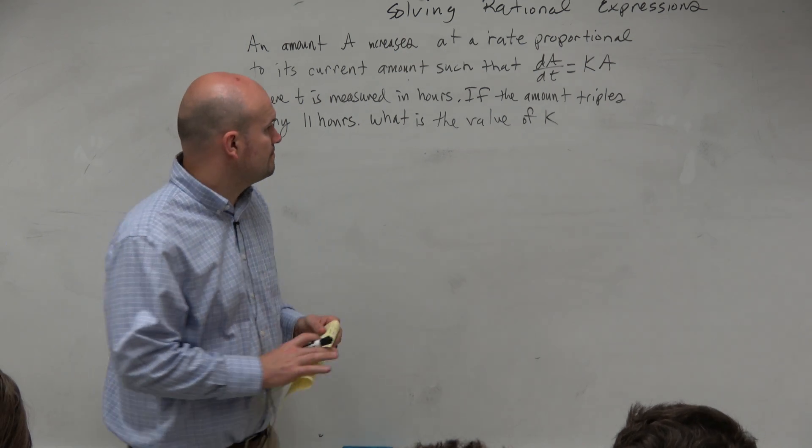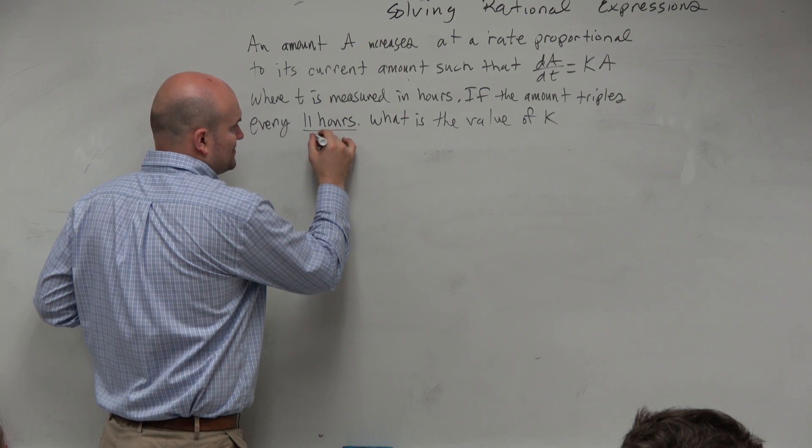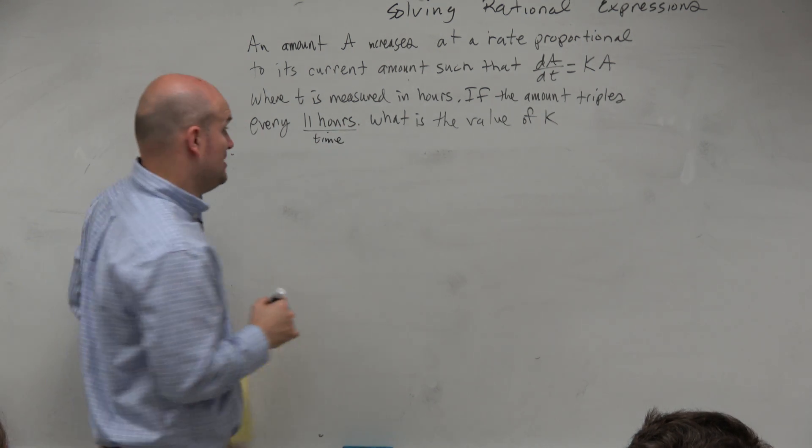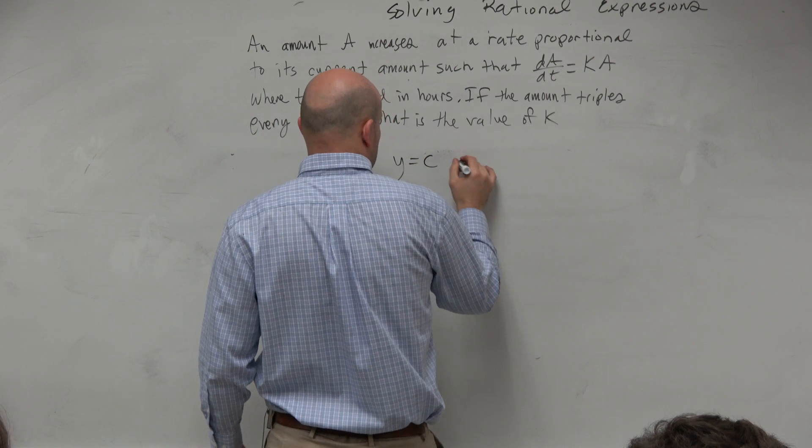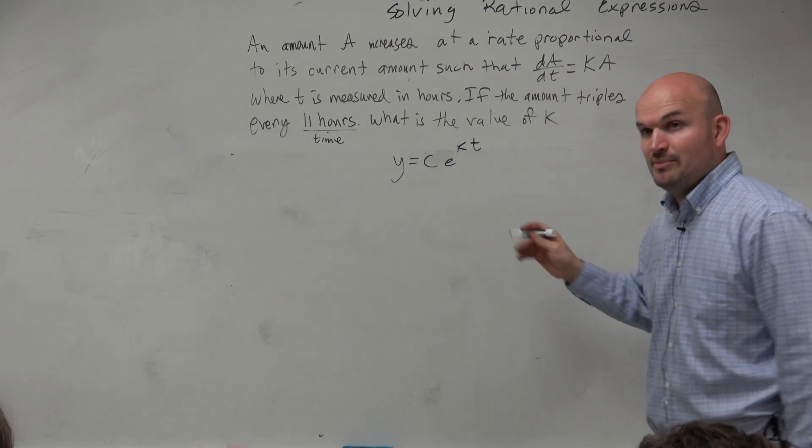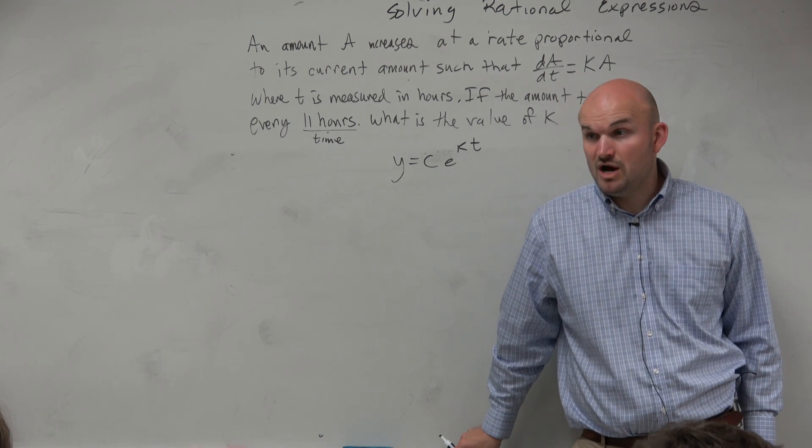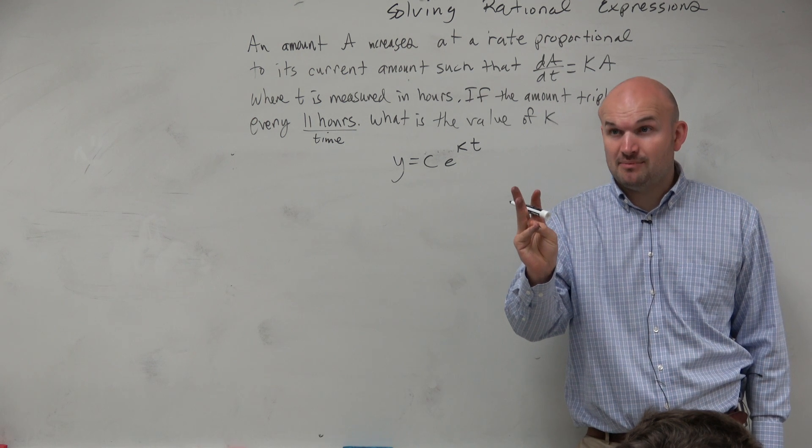So we have this, which is time, right? We have rate proportional, so y is equal to c e to the kT. We're looking for k, but do we have an initial and a final? No, right? That's two unknowns. That's a big problem.